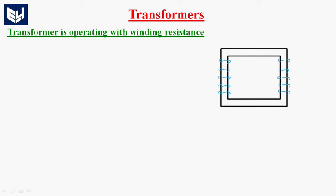The primary winding has N1 number of turns and the secondary winding has N2 number of turns. Let us assume that the primary winding has a resistance R1. A voltage source is connected to the primary and the secondary winding has a winding resistance R2, and this secondary winding is connected to a load.